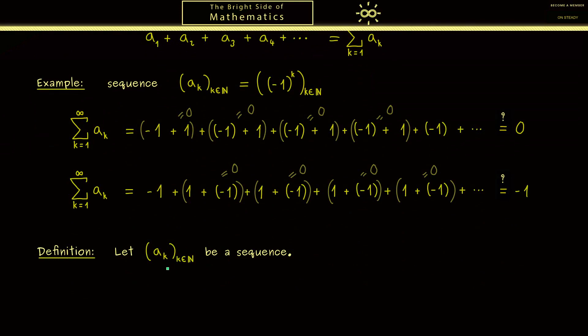For this let aₖ be any sequence of real numbers. And then we define a new sequence sₙ by setting sₙ to be the sum of the first n members of the sequence aₖ. So this is just a normal finite sum. Hence sₙ is a real number as well. Therefore the whole sequence given by sₙ is what we call the series.